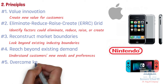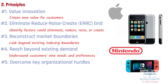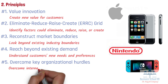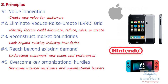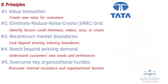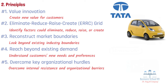Number 5: Overcome Key Organizational Hurdles. Implementing a Blue Ocean Strategy often requires overcoming internal resistance and organizational barriers. To succeed, companies must foster a culture that supports change, innovation, and risk-taking. For example, when Tata Motors, an Indian automotive manufacturer, set out to create the Tata Nano, an affordable car for the masses, they faced numerous internal challenges, including cost constraints and skepticism about the feasibility of the project. To overcome these hurdles, the company encouraged a culture of innovation and collaboration, empowering its engineers and designers to find creative solutions for achieving the ambitious goal of producing a low-cost vehicle.